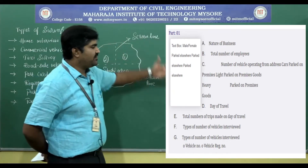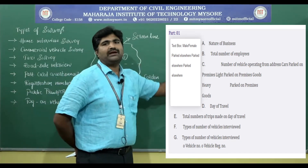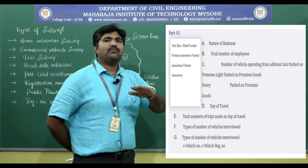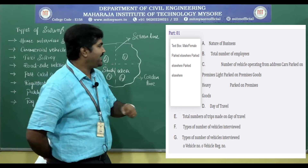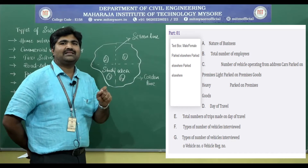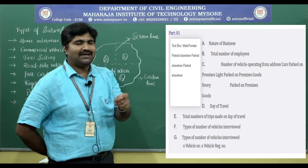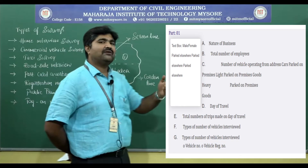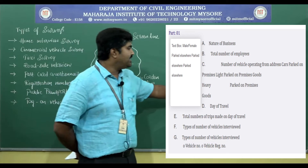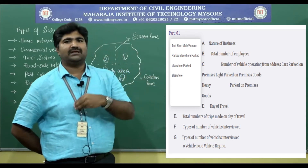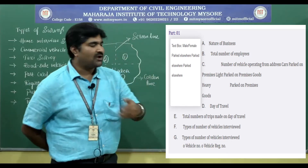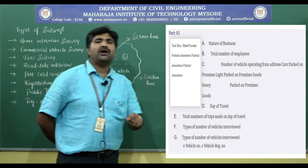Next, Part 1 of the questionnaire format. Nature of business — what type of business the firm is having — should be collected. Total number of employees in the firm or company. Number of vehicles operating from the address. Also we have to collect whether there is a premises for parking. Whether the vehicle is a heavy goods vehicle or light commercial vehicle should also be recorded, along with their day of travel, where they transport the goods, and the total number of trips made on the day of travel.